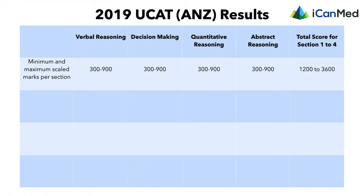The scores for the first four sections of the UCAT have a total score range of 1200 to 3600. Section five is assessed differently and we'll talk about that later. Each of the four subtests is weighted exactly the same. UCAT takes the raw score for each section and converts it to a scaled score from 300 to 900, so when you add all four sections together you get a minimum of 1200 and a maximum of 3600.